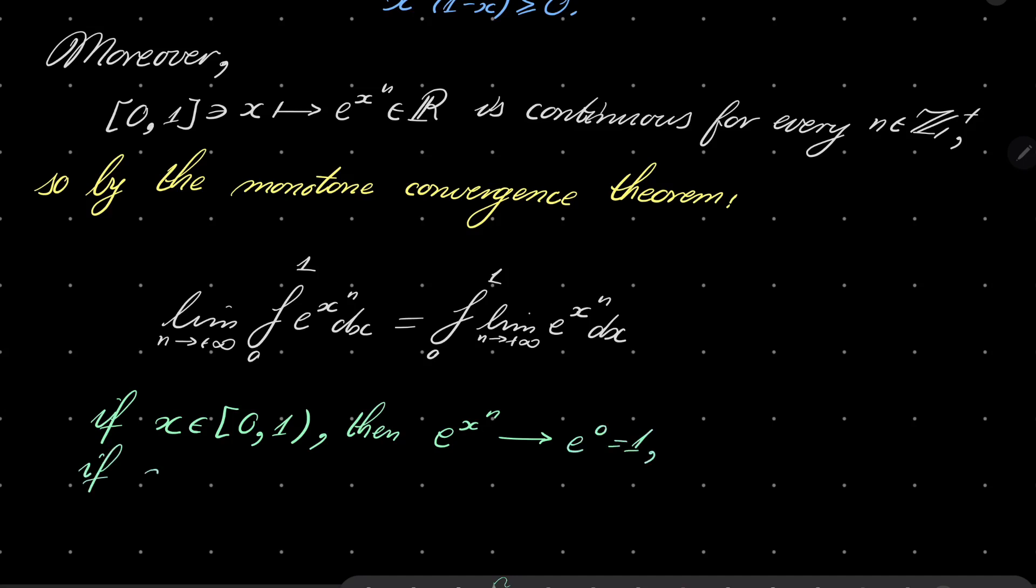And if x is 1, then e to the power of x to the power of n, well, it's just e. It equals e, so it also converges to e, but it's just one point.